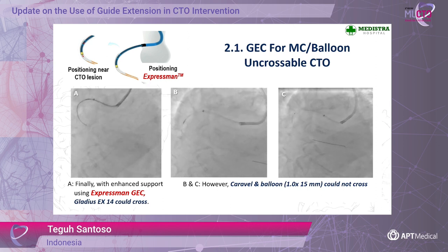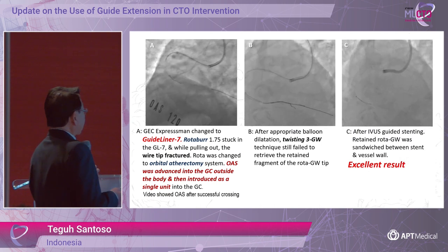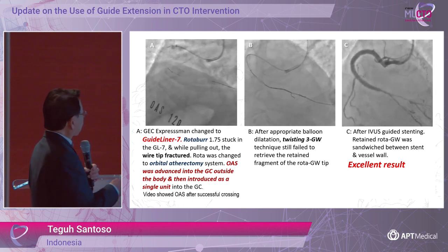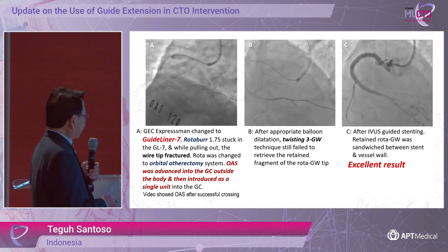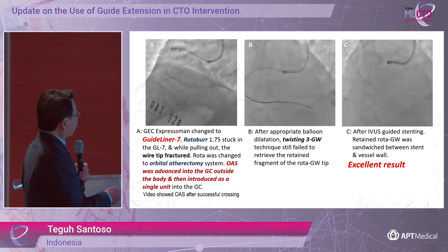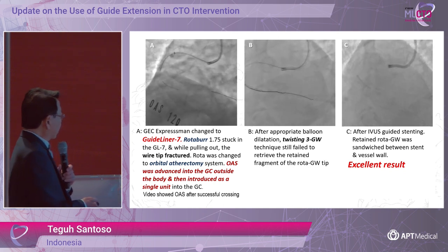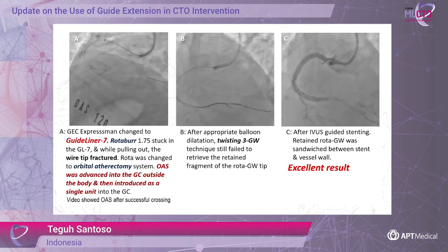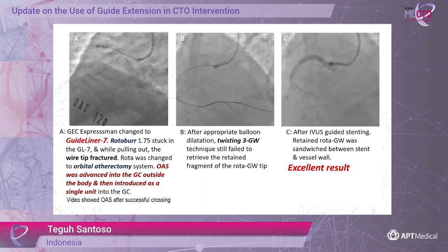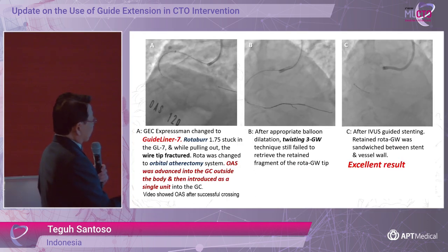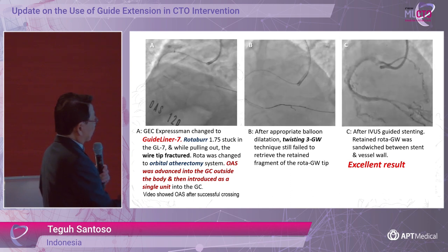However, Caravel and a low-profile balloon could not cross. I changed to Expressman hoping to improve support and used rotablation — since I already had wire downstream — but the rota got stuck very deep in the GuideLiner. I then changed to orbital atherectomy, with the wire fragment left in place. We advanced the orbital atherectomy device outside the body and introduced it as a single unit. We tried to retrieve the fractured wire with triple wire and twisting wire techniques but failed, so we left it in situ and sandwiched the fractured wire. The ultimate result was excellent.